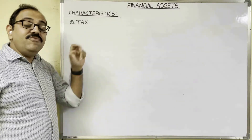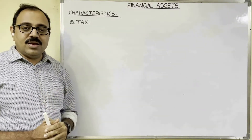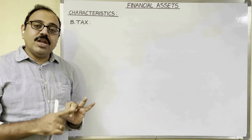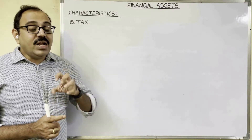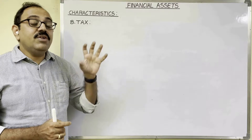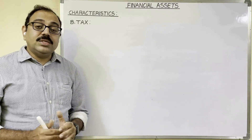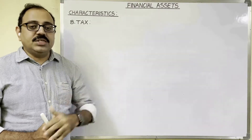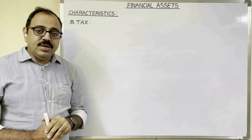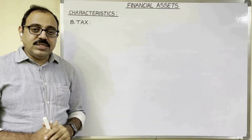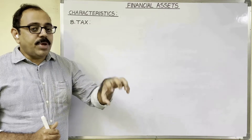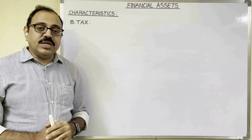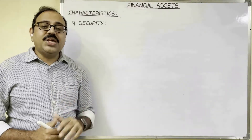The eighth feature is tax. Some financial assets give tax benefits to the investor — for example, mutual funds, life insurance policies, and government bonds — where the investor can avail tax benefits on the income generated. But some financial assets are taxable. For example, income from shares in the form of dividend is taxable income, and the income generated from fixed deposits with a bank is also taxable income.